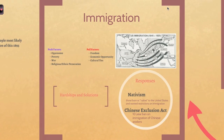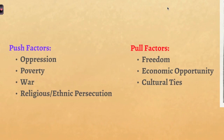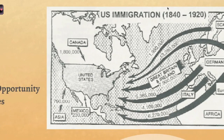Another huge issue during this time is immigration. We know immigration really boomed starting around the 1840s, especially from Ireland with the potato famine, and it continued to rise in the Gilded Age. There are many factors leading people to want to move to the United States. Push factors push people out of their current country — such as oppression, poverty, war, or religious and ethnic persecution. Pull factors draw them into America: the idea of freedom, jobs and economic opportunity, and cultural ties like family or relatives already here.